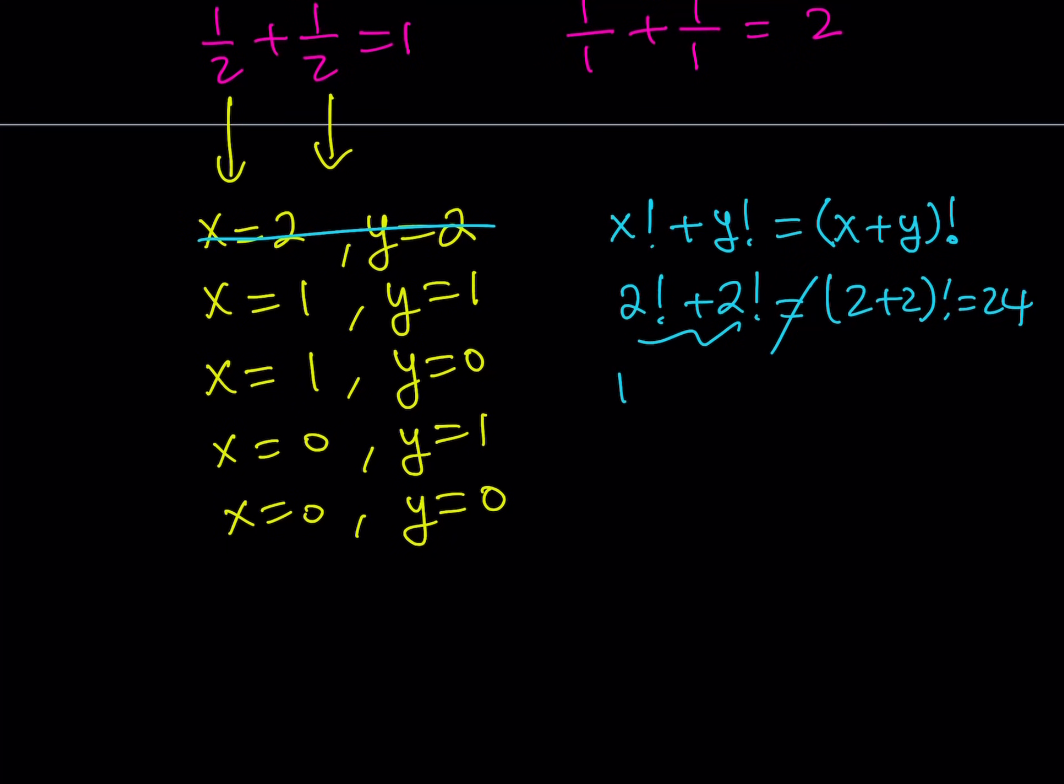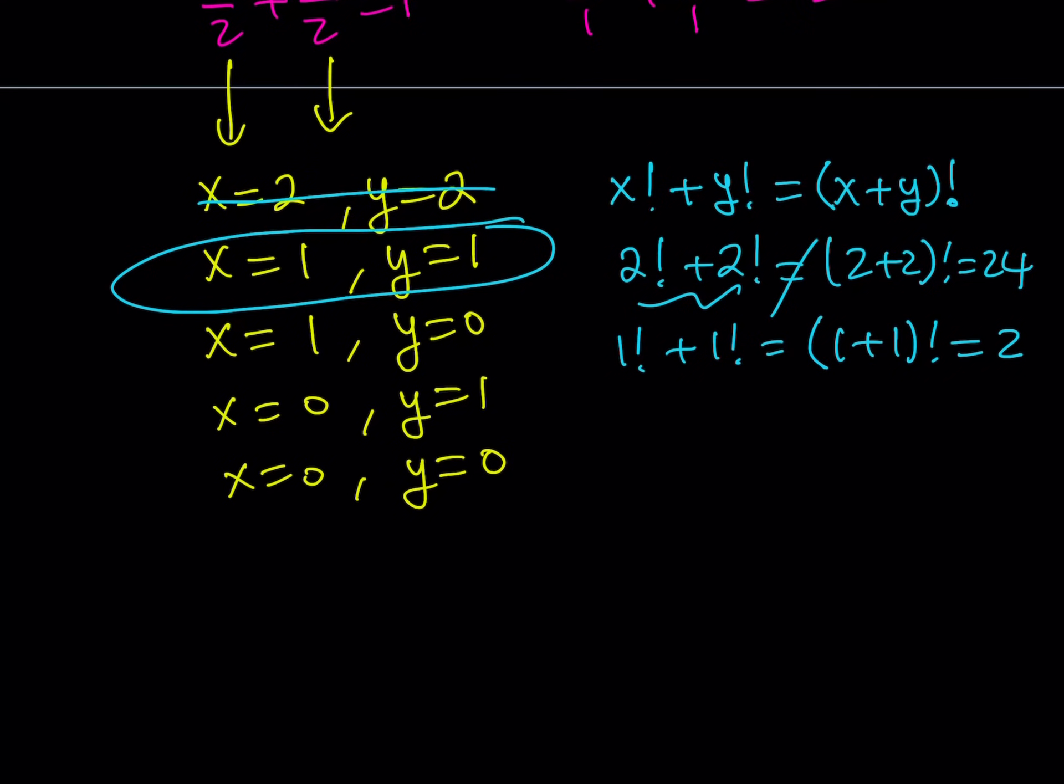Let's try another one. What about 1 factorial plus 1 factorial? Would that be equal to 1 plus 1 factorial? Which is 2 and that is absolutely true. So this would work for us. Let's continue. How about 1 and 0? Let's try that out. So 1 factorial and 0 factorial. Does that give me 1 plus 0 factorial? But this is equal to 1. This is equal to 2. So they're not equal. So this is not going to work.